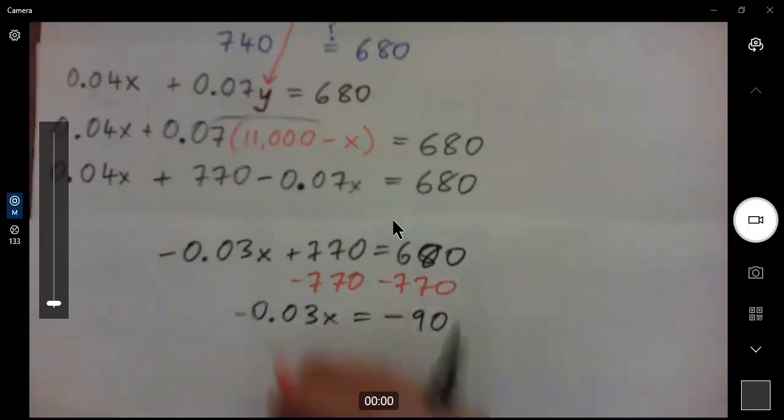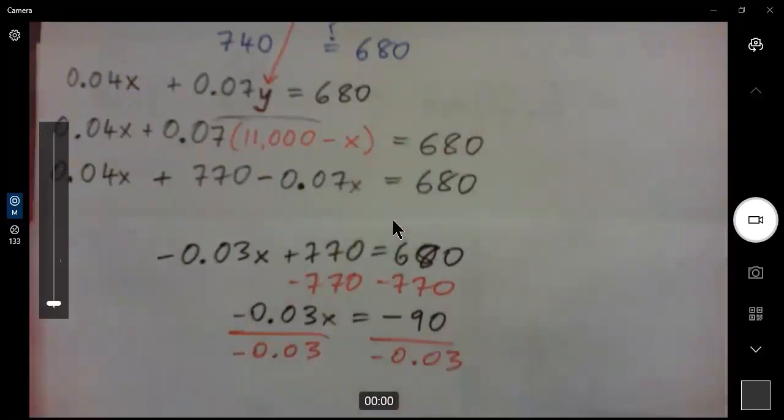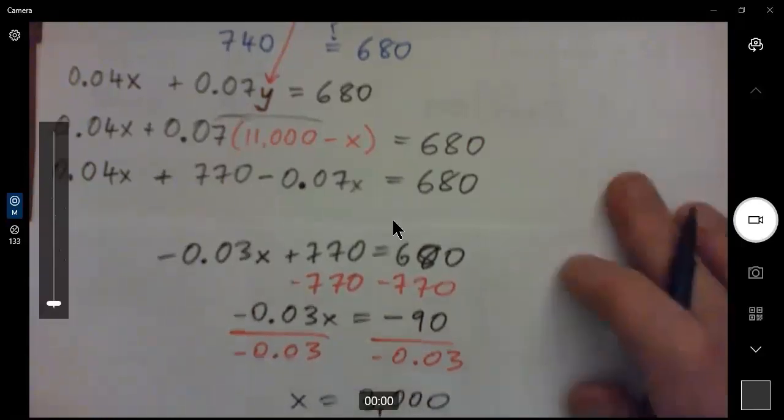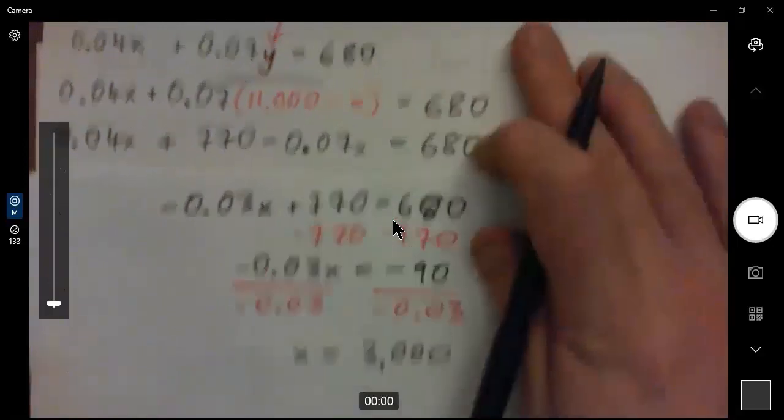And we get negative 0.03X equals negative 90, right? Okay. And then divide both sides by negative 0.03. And you guys can use the calculator if you like, but you should get X equals 3,000. All right. X equals 3,000.